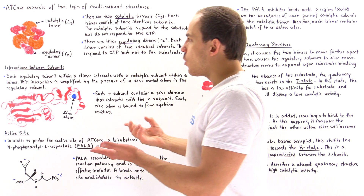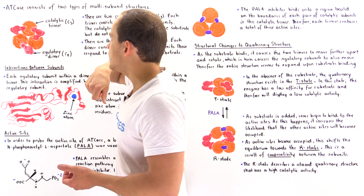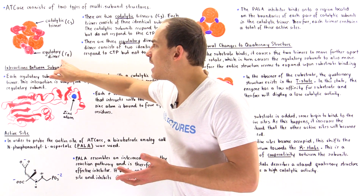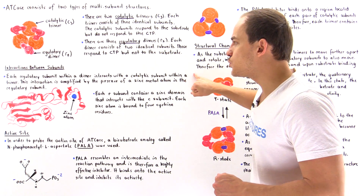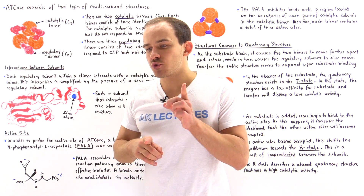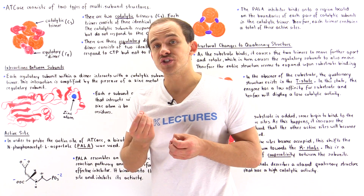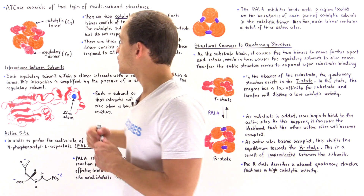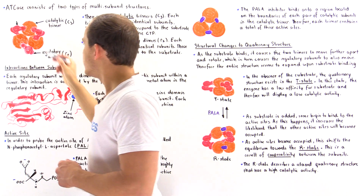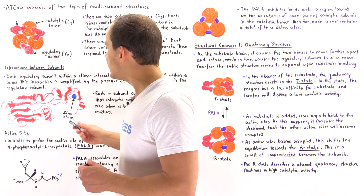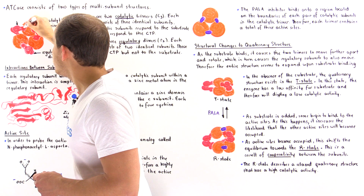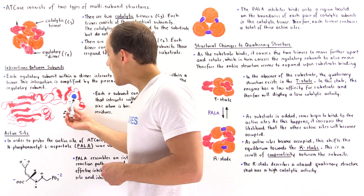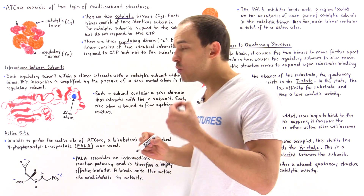The question is: what exactly is the interaction like between regulatory dimers and catalytic trimers? It turns out that each regulatory chain in each dimer interacts with one catalytic chain in each catalytic trimer. This interaction is amplified by the presence of a zinc metal atom. At the interface between the red regulatory chain and the orange catalytic chain, we find a zinc atom that interacts with four cysteine residues.